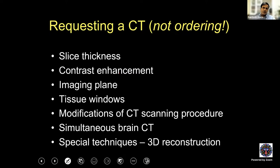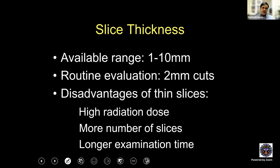For slice thickness, the range is 1 to 10 mm. For routine evaluation, 2 mm cuts are required. The disadvantage of thin slices used to be high radiation dose and more slices required, resulting in longer examination time — but spiral acquisition has reduced these disadvantages. For optic nerve evaluation, you would still prefer a 1 mm cut. For routine orbital evaluation, 2 mm cuts are important because lesions may be very small, and if you have a larger cut you may miss a small lesion between two cuts.